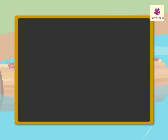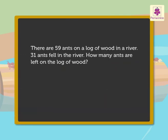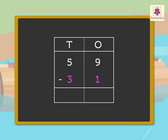First, we read the story. What information does it give? There are 59 ants on a log of wood in a river. Thirty-one ants fell in the river. Now, let us see what we have to find out: how many ants are left on the log of wood? Here, we have to subtract 31 from 59 to find the answer.